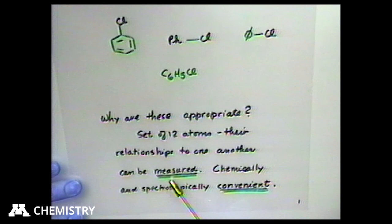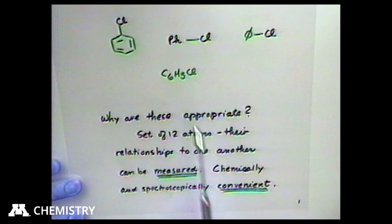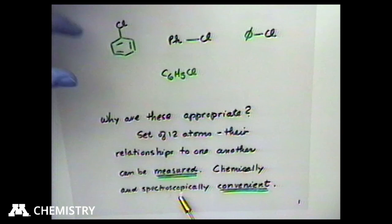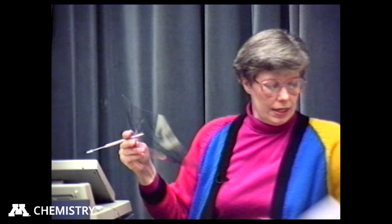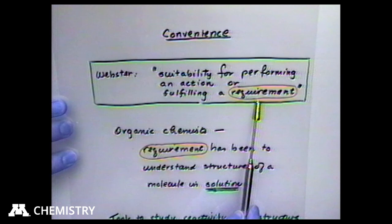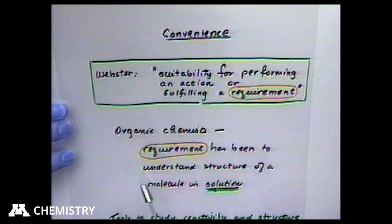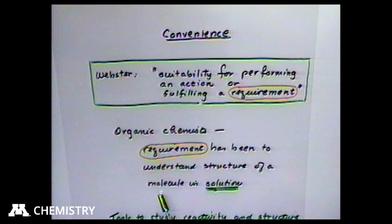The connectivity of atoms is what makes the molecule. It also shows relationships that can be measured — as chemists, we work on things that are measurable. So these representations are chemically and spectroscopically convenient. The requirement chemists have had is to understand the structure of a molecule in solution or in the gas phase. These representations show single molecules, their connectivity, and something useful.